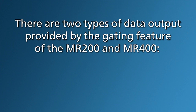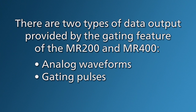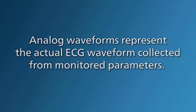There are two types of data output provided by the gating feature of the MR200 and MR400 – analog waveforms and gating pulses. Analog waveforms represent the actual ECG waveform collected from monitored parameters.